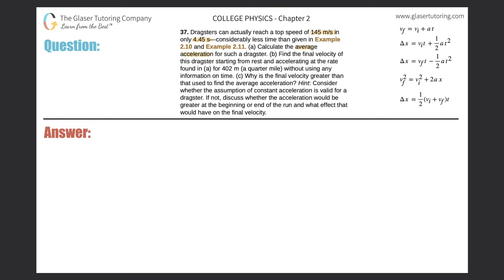For Part A, let's identify what we're given. The dragster reaches a final velocity of 145 meters per second. It starts from rest, so the initial velocity is zero meters per second, and it changes its velocity in 4.45 seconds.